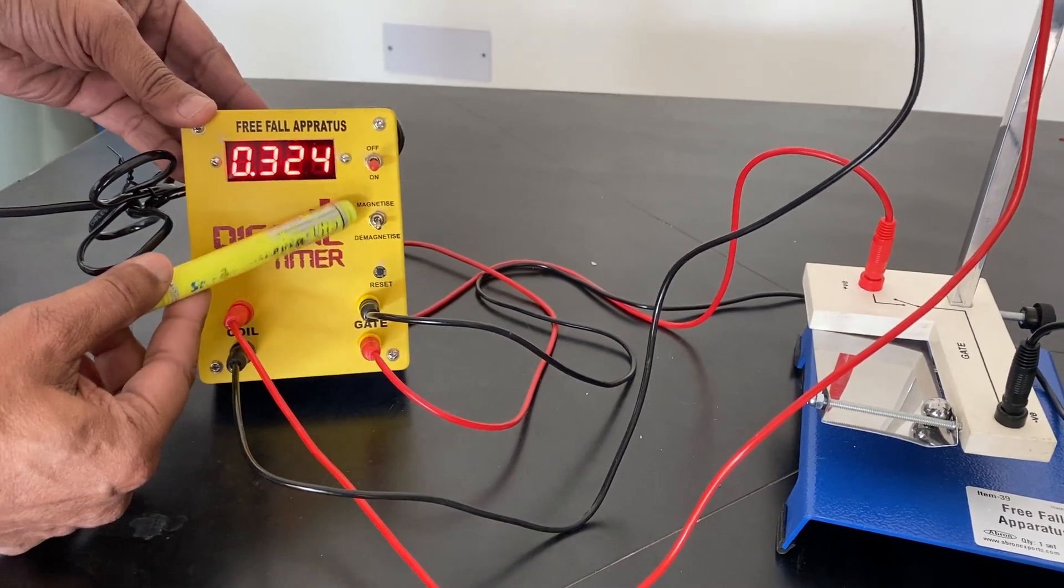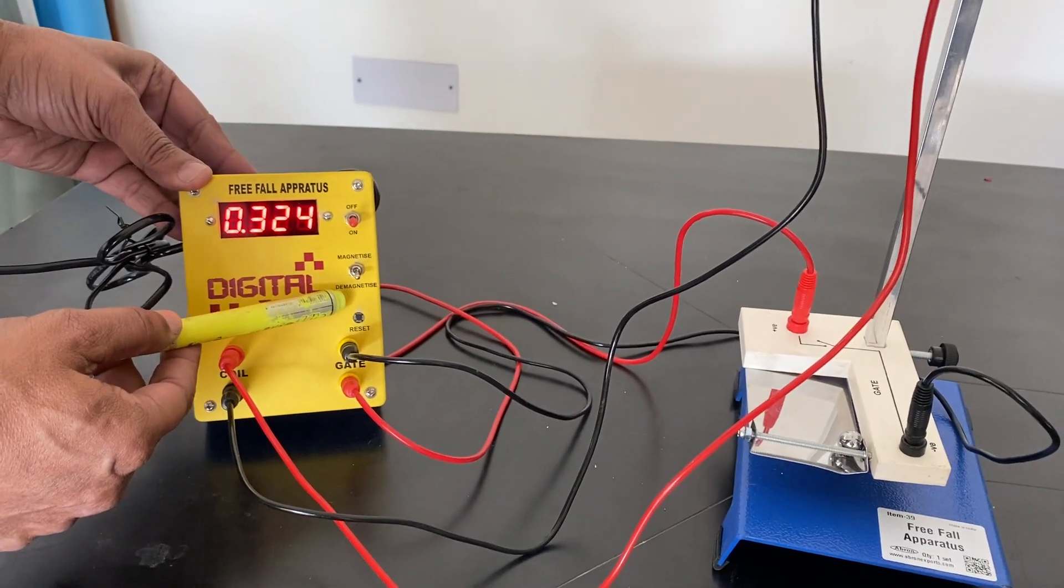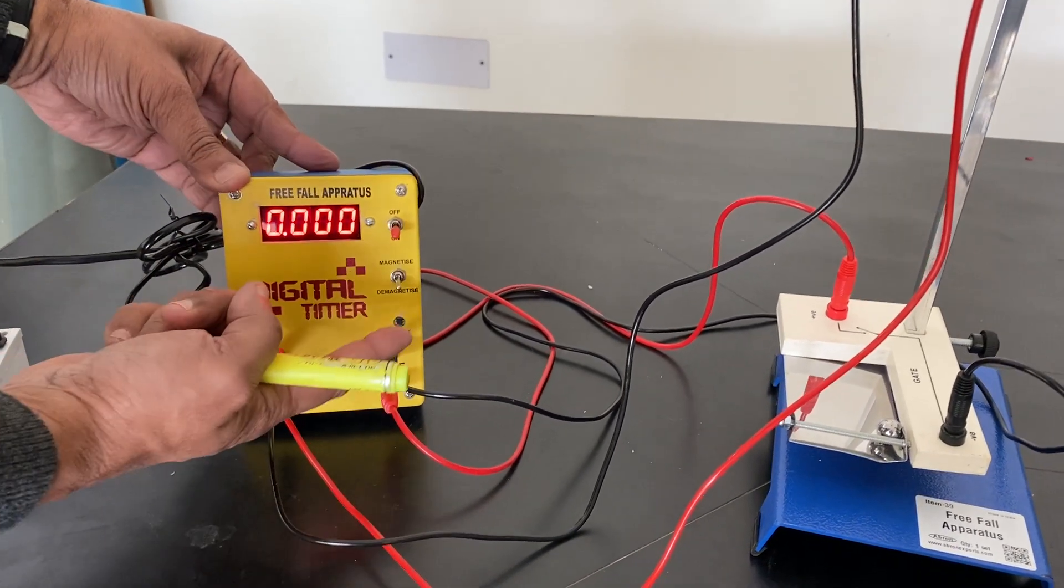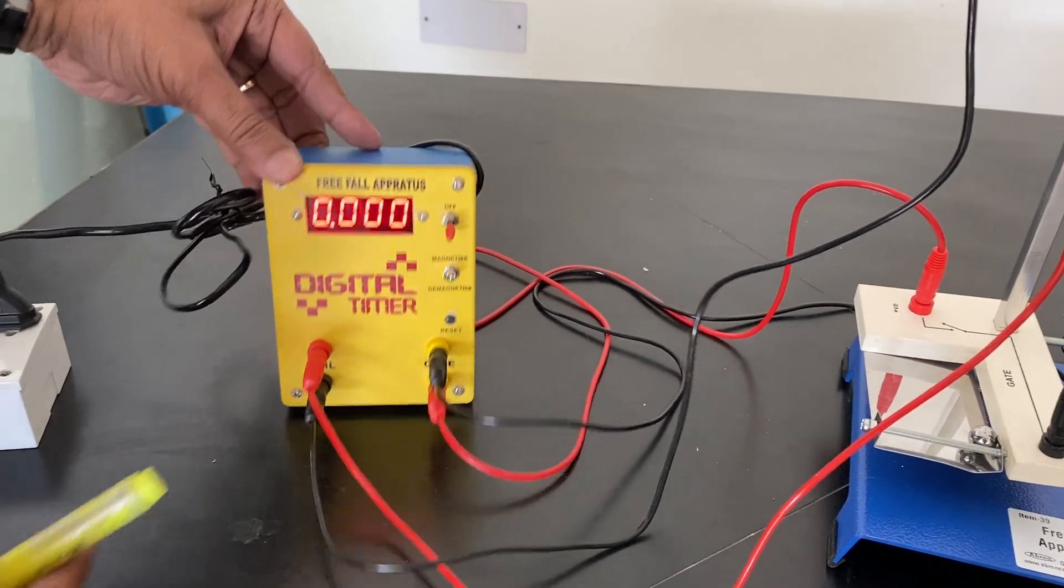Magnet, when you demagnetize, the coil will release and then it will come down the ball and this will record the time. You can reset the time again. Put it back magnet and very easy.